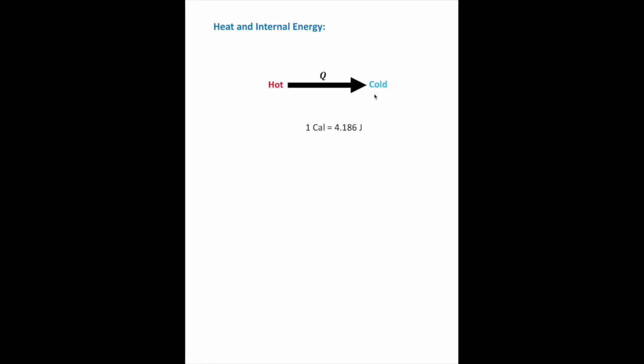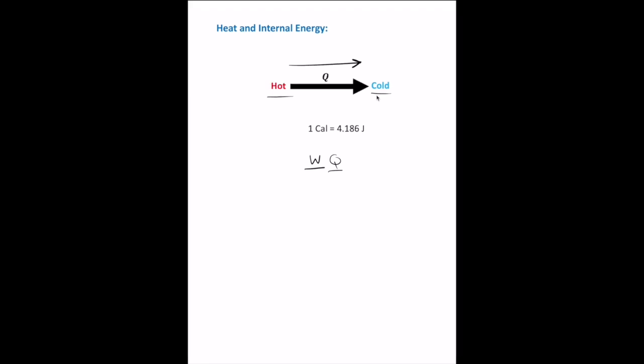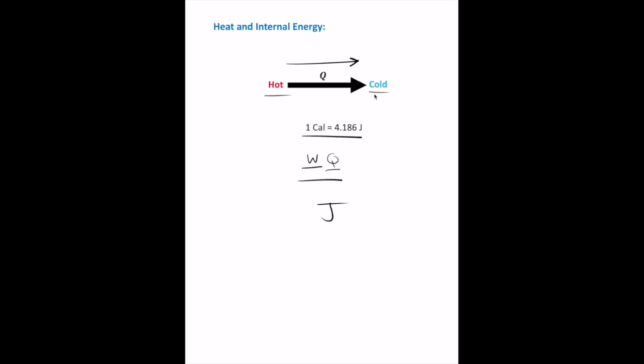Experiments by James Joule revealed that energy can be transferred to or from a system by work or by heat. Heat is defined as the amount of energy transferred between substances or between a system and its environment due to a temperature difference. Heat always refers to energy in transit because of a temperature difference — never to the energy contained in the system. Work is also energy in transit. Both have SI units of joules.